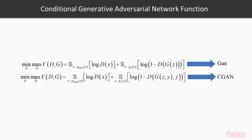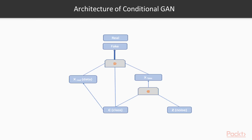This is the objective function of Conditional Generative Adversarial Network. The difference between GAN loss and Conditional GAN loss lies in the additional parameter Y in both the discriminator and generator function. The architecture of Conditional GAN has an additional input layer in the form of Condition Vector C that gets fed into both the discriminator network and generator network.